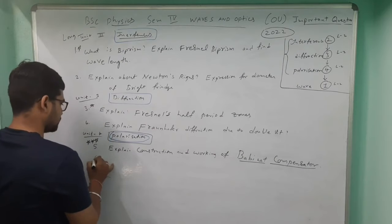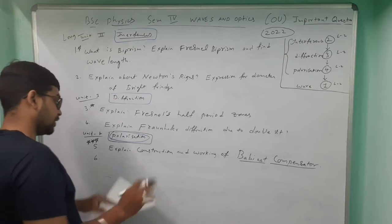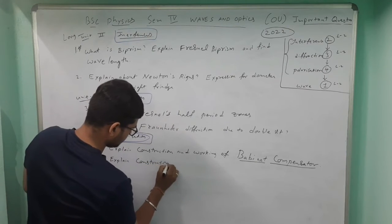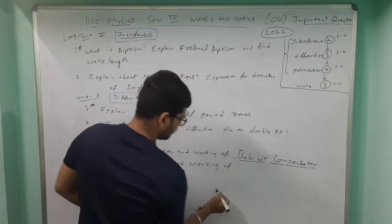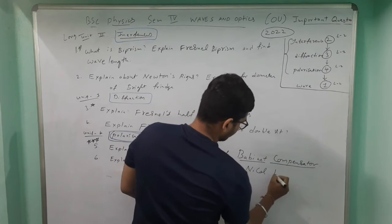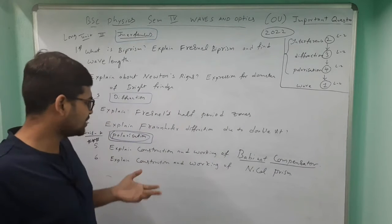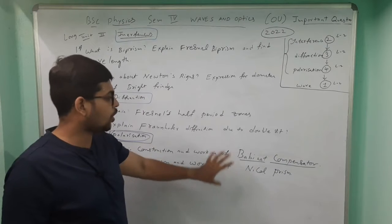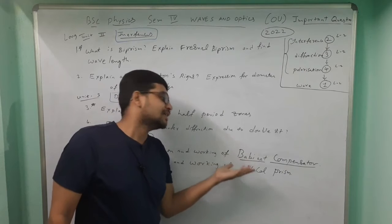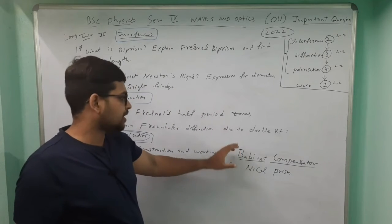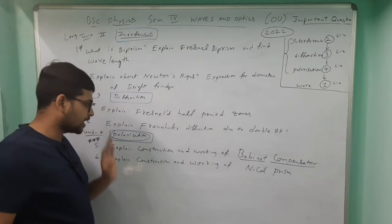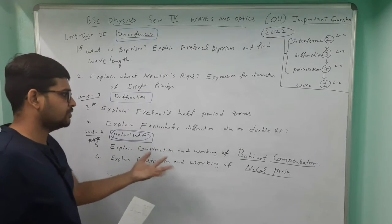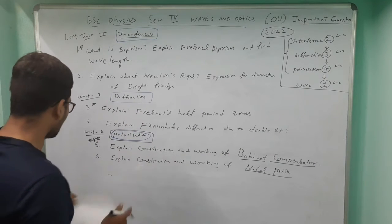Learn this properly. The sixth question: describe the construction and working of the Nicol Prism. Don't be scared when you first see the question. The diagram may look tough, but start slowly — draw the diagram line by line, read it once fully, and you'll find it very easy. Try to have a habit of drawing the Nicol Prism. Two to three times before the exam is enough.